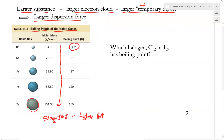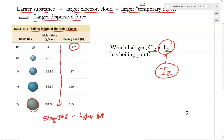Let's do a practice question to make sure you understand this concept. Which halogen between chlorine and iodine will have a higher boiling point? It is quite easy to answer: iodine is larger and heavier, so I₂ would have the higher boiling point.